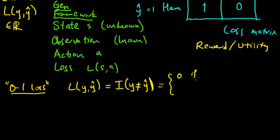And if you get it right you get loss of 0. So this is just 0 if y equals y hat and 1 otherwise. And this is usually used in classification. So for binary classification, for example.